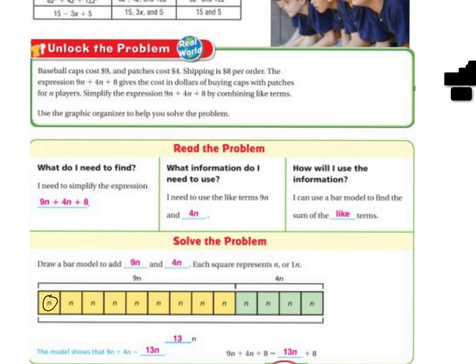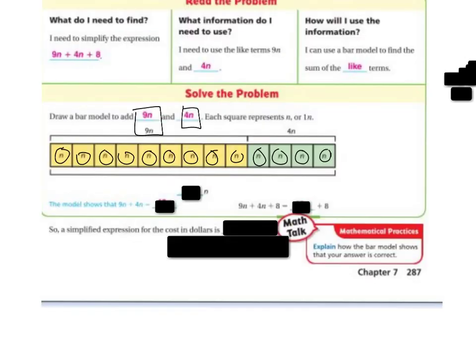So in the bar model, I can add 9n and 4n. So each square is going to represent 1n. So we have 1, 2, 3, 4, 5, 6, 7, 8, 9. So these yellow ones represent the 9n. And then the green ones have 1, 2, 3, 4, which represents my 4n.